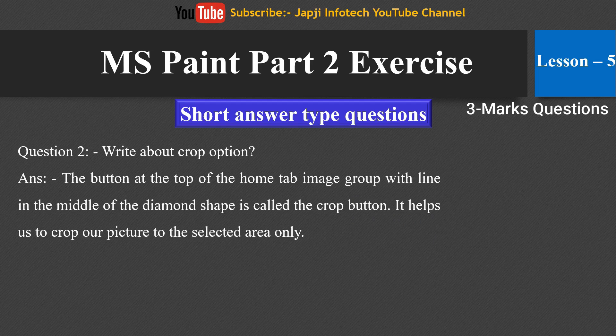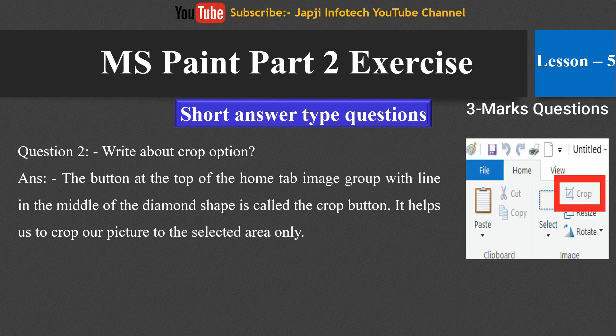The next question is: write about the crop option. The button at the top of the home tab image group with a line in the middle of a diamond shape is called the crop button. It helps us to crop our picture to the selected area only.